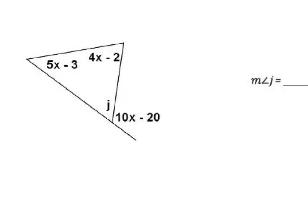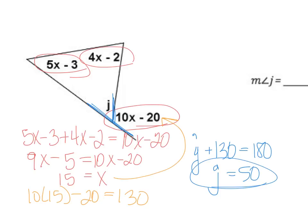We know we can use the exterior angles — the exterior angle equals the sum of the two opposite interior angles. I used that theorem and solved for x, then plugged x back in and found that this angle is 130 degrees. Looking at the linear pair, j plus 130 equals 180, solving for j gives 50 degrees.